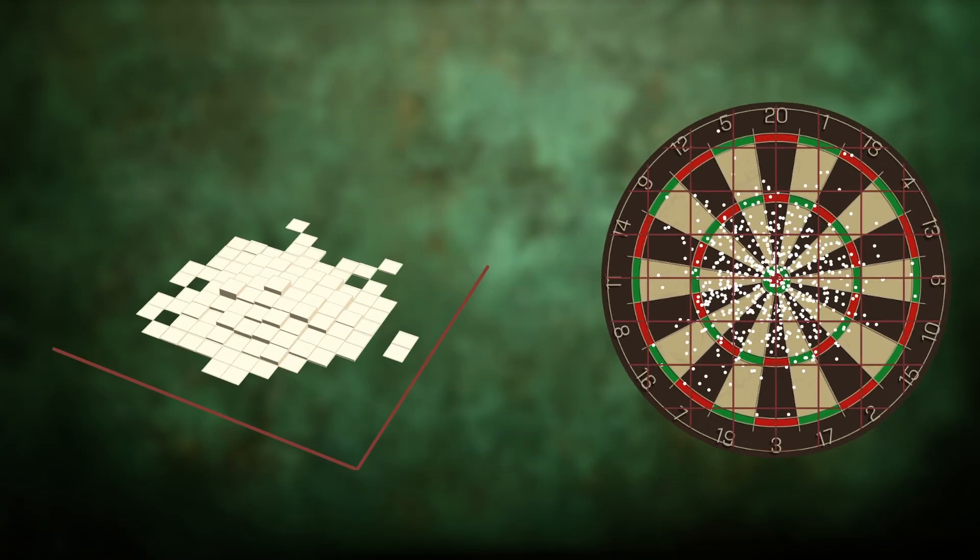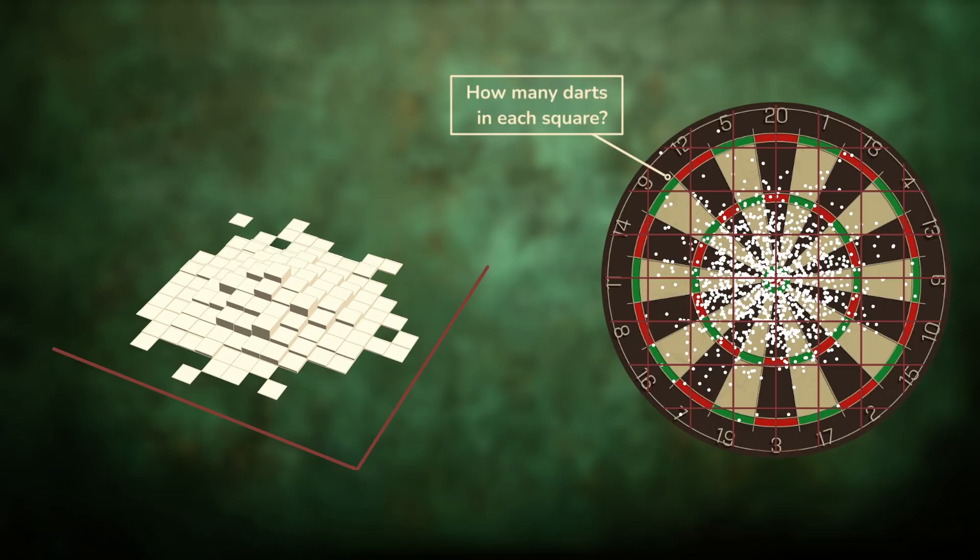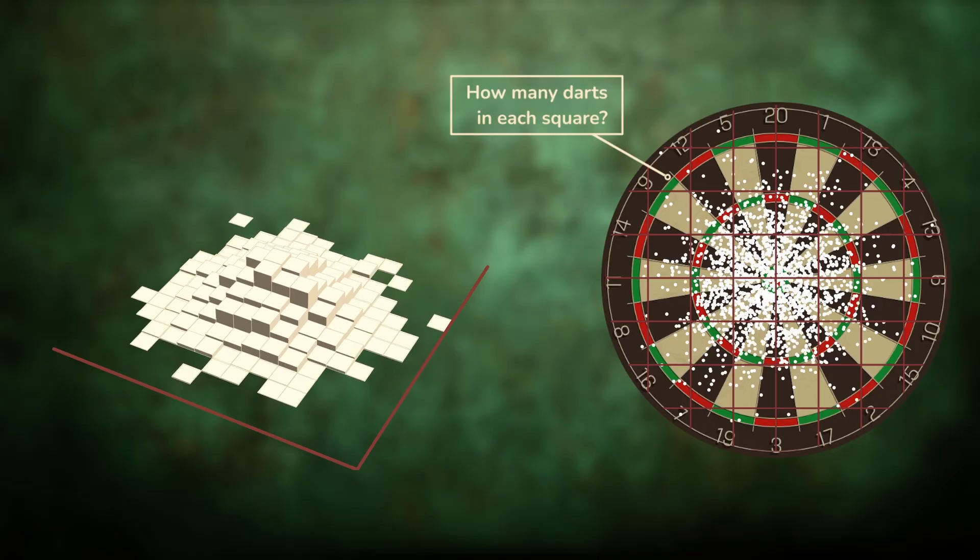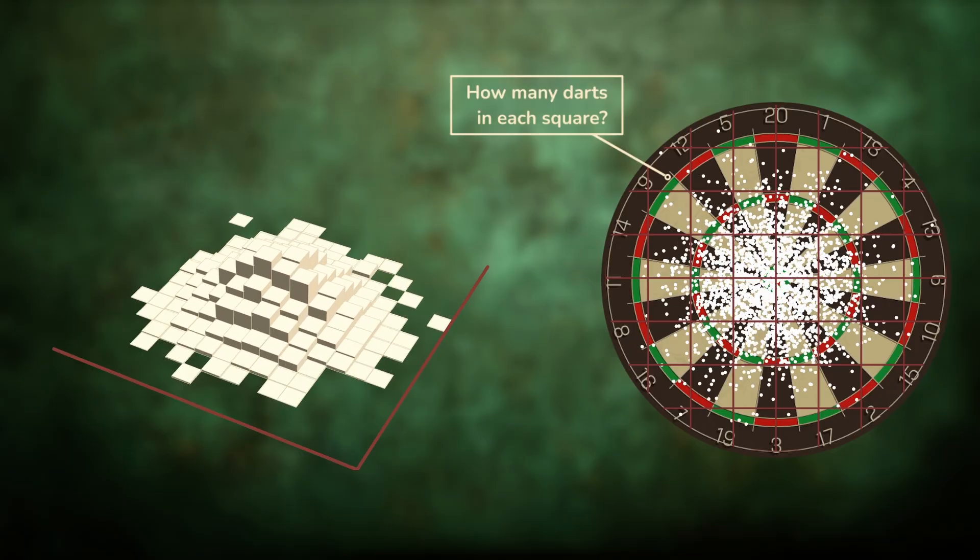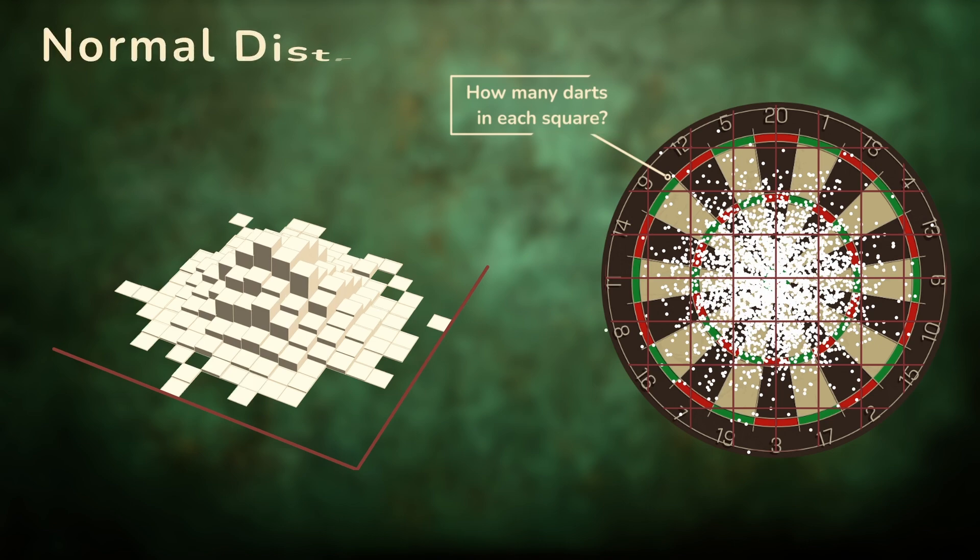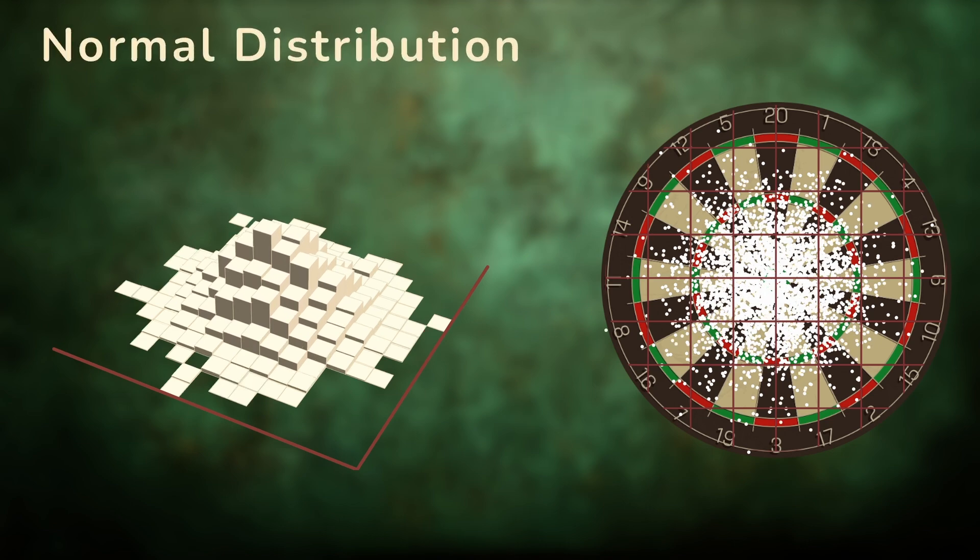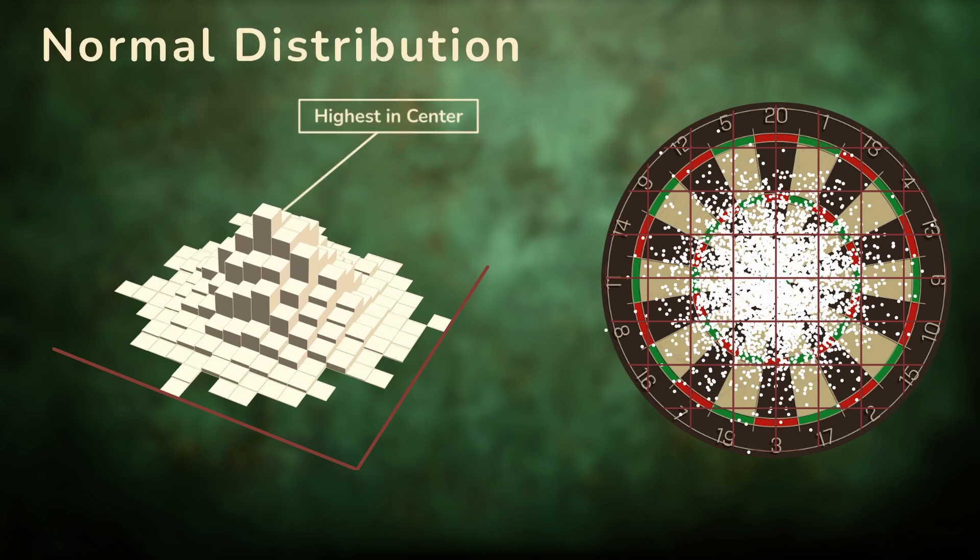Imagine dividing the board into small sections and counting how many darts land in each one. At first, the counts look random, but gradually a structure emerges. Stack those counts vertically and you see something remarkable. A smooth hill, highest in the center, gently tapering off in all directions.